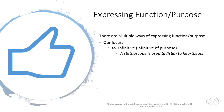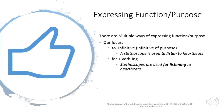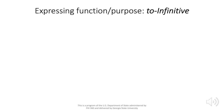There are multiple ways of expressing functions, but we will focus on just three of them. The first is the to-infinitive, or infinitive of purpose — for example, 'a stethoscope is used to listen to heartbeats.' The second is 'for' plus a verb in the -ing form — for example, 'stethoscopes are used for listening to heartbeats.' Our third way is 'for' plus a noun or noun phrase — for example, 'otoscopes are for ear examination.'